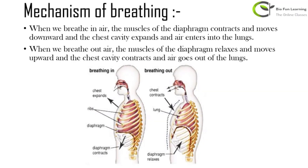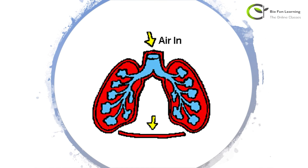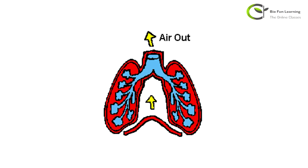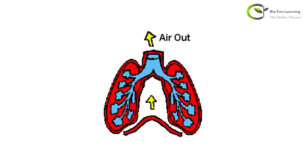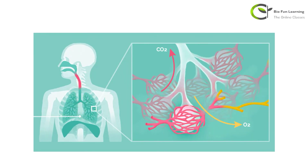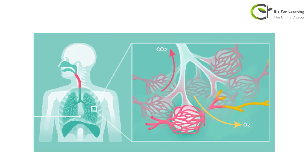When we breathe in, the muscles of the diaphragm contract and move downward, the chest cavity expands, air fully enters the lungs, and the lungs expand. When we breathe out, the diaphragm muscles relax and move upward, the chest cavity contracts as air passes out, and the lungs also contract. When breathing in, lungs expand and diaphragm contracts; when breathing out, lungs contract and diaphragm muscles relax and move upward. Oxygen is inhaled and carbon dioxide is exhaled.